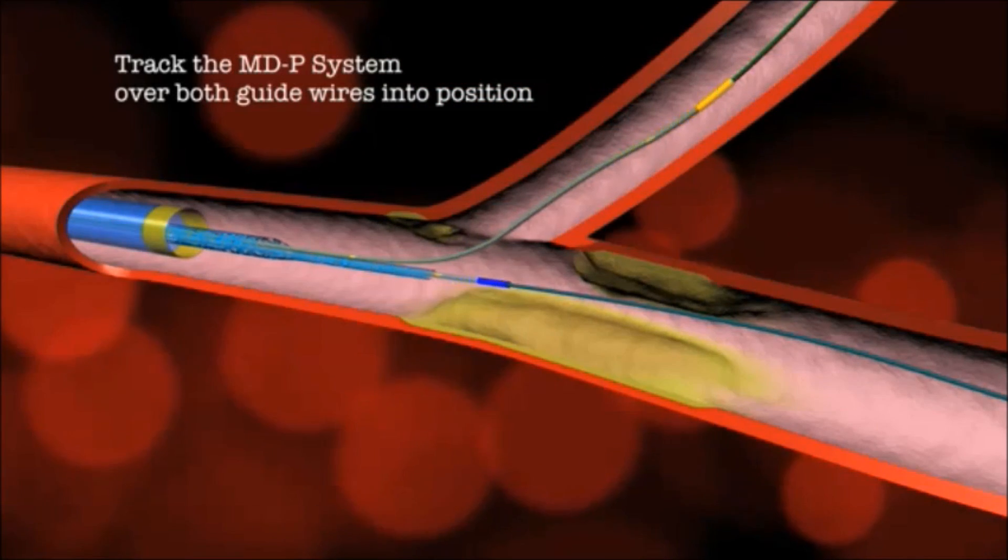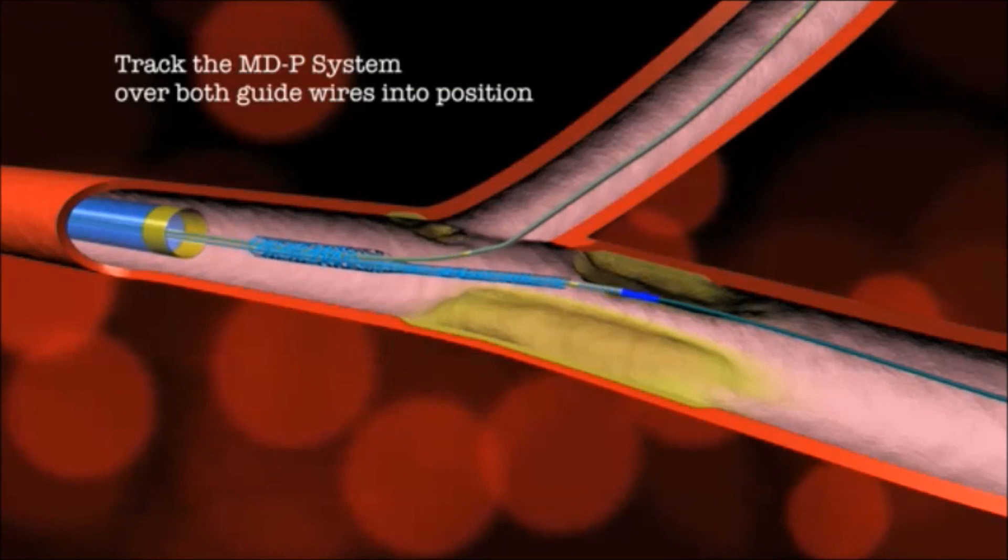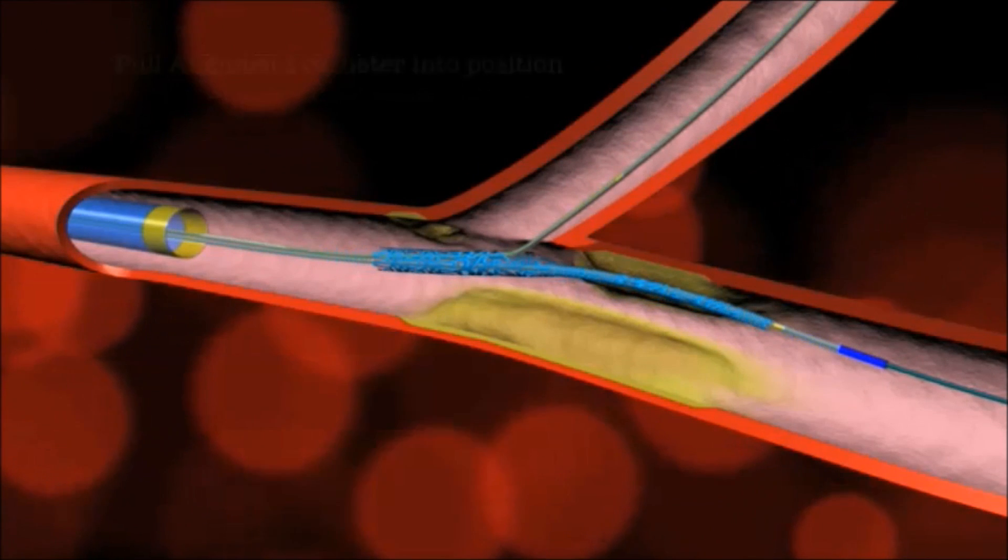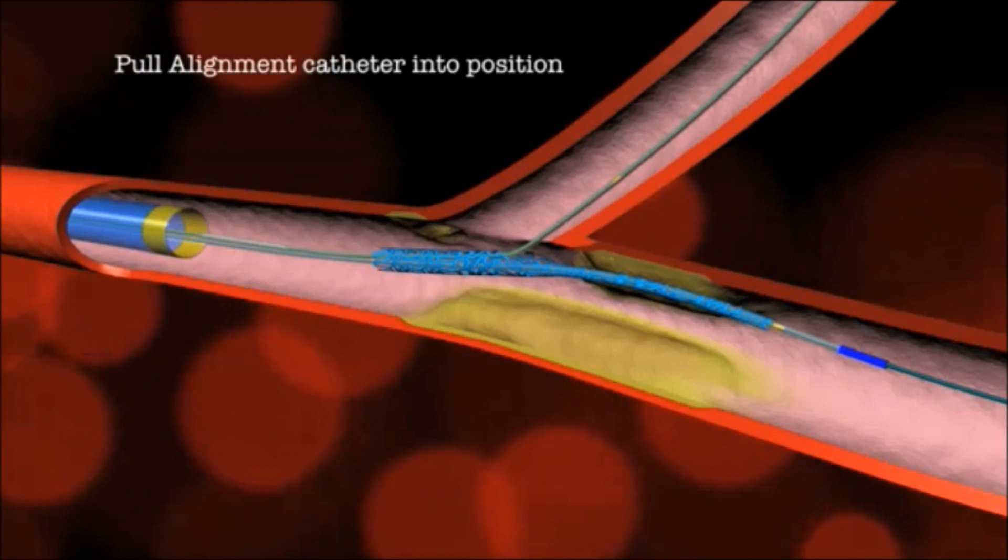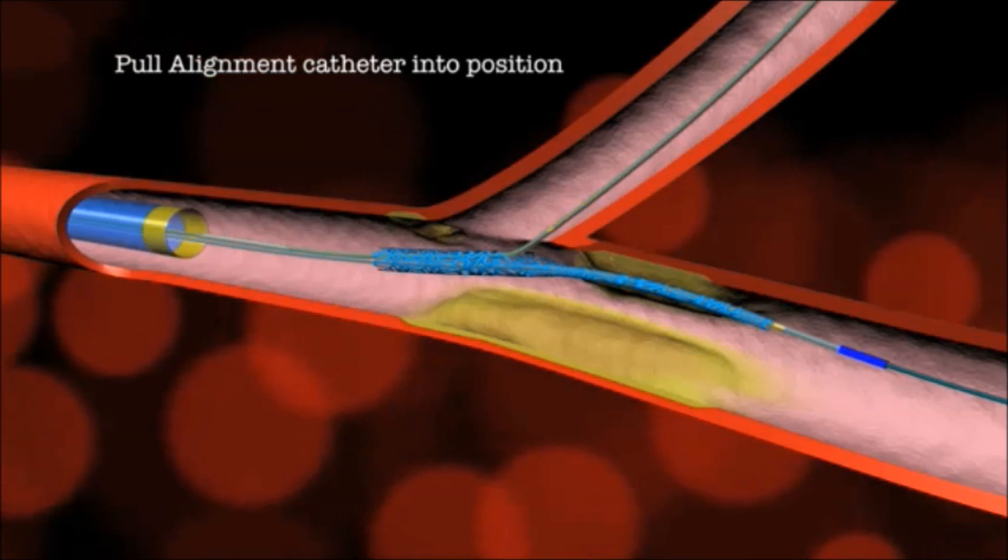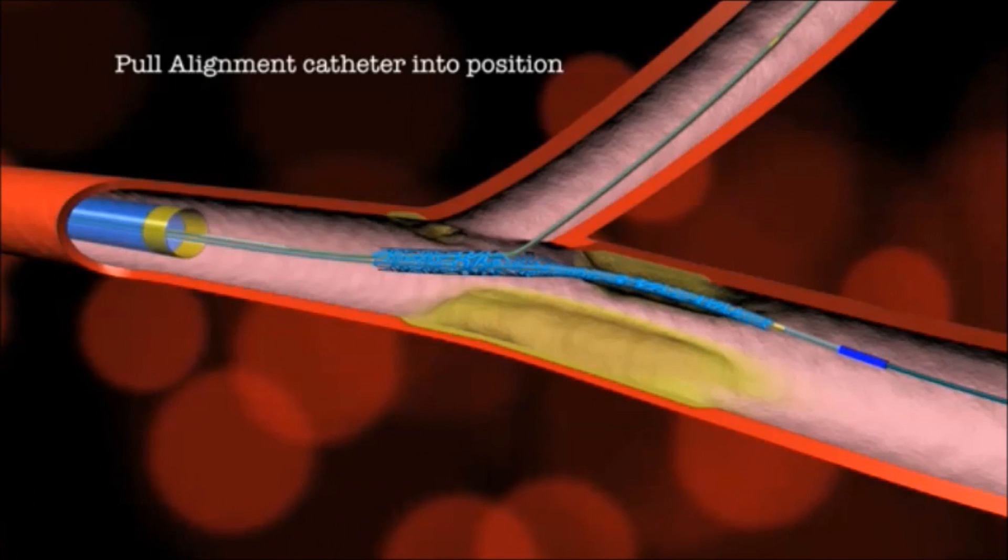The system is then advanced to the corina. The bifurcation stent and aperture are aligned with the side branch by pulling back the daughter catheter to align the two proximal markers.